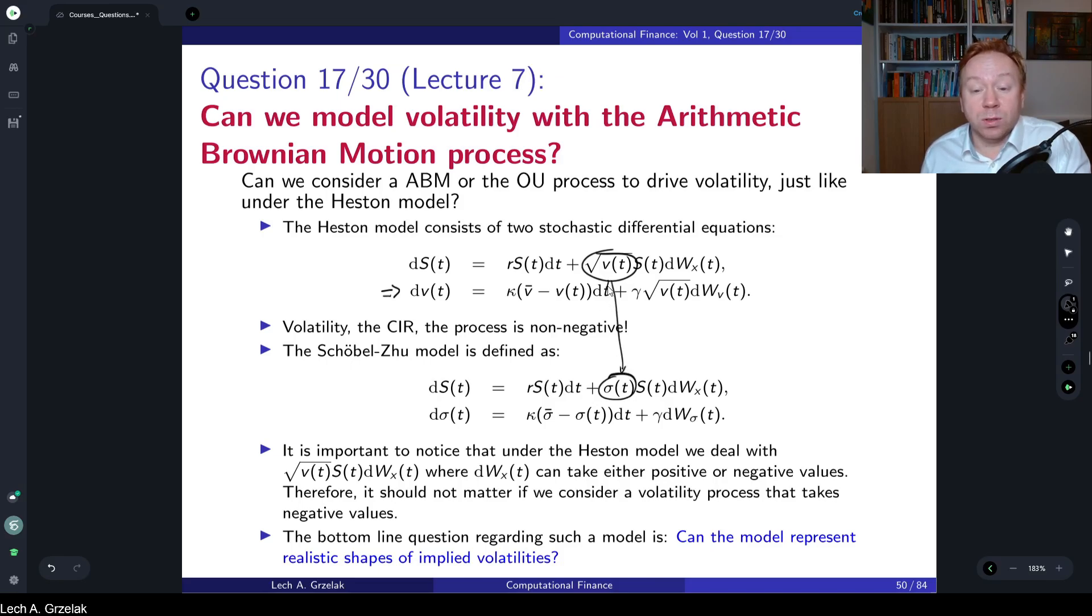What is interesting is that this type of question has been already addressed in the literature and that's called the model of Schöbel-Zuh. In the Schöbel-Zuh model, the volatility process is not given by the CIR process that only allows for positive realizations. They define this volatility to be driven by the OU process, the so-called Ornstein-Uhlenbeck process, a normally distributed process with mean reversion parameter kappa, long-term volatility sigma bar, and volatility of volatility gamma.